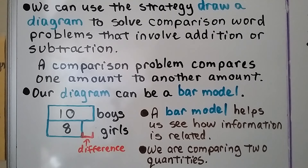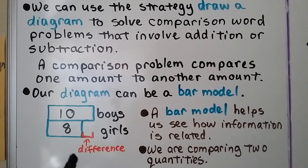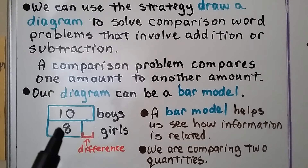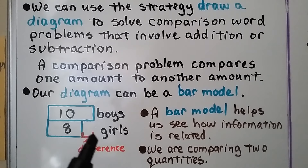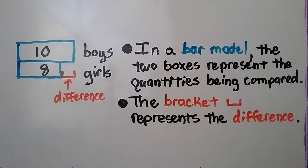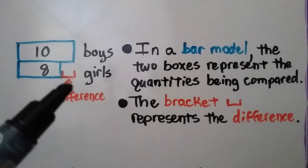A comparison problem compares one amount to another amount. Our diagram can be a bar model. A bar model helps us see how information is related when we're comparing two quantities. If we have ten boys and eight girls and we want to know how many more boys there are than girls, we put the boys here, the girls quantity here, and whatever this difference is, is how many more boys there are than girls. In a bar model, the two boxes represent the quantities being compared, and the bracket represents the difference.